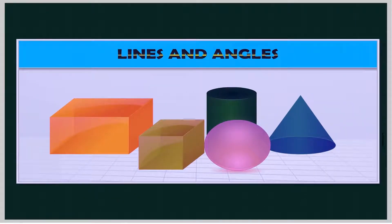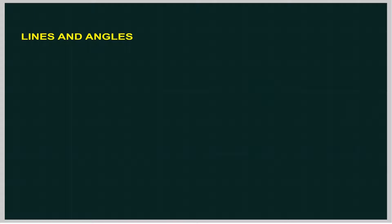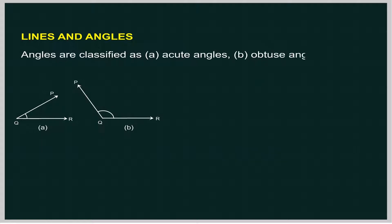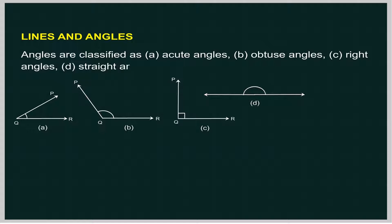Lines and Angles. Angles are classified as acute angles, obtuse angles, right angles, straight angles, and reflex angles.